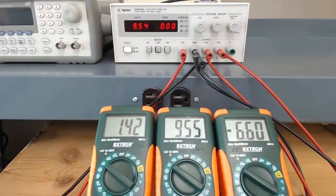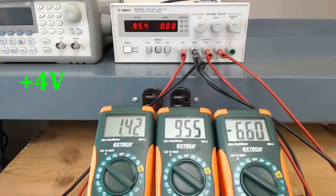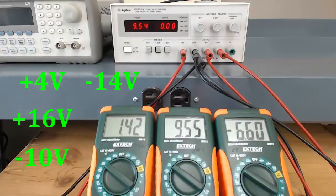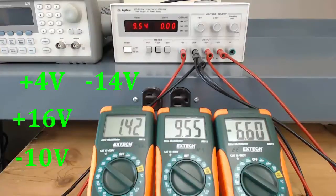An exercise I have often given to help students understand the DC power supply is to set up the power supply so that several voltages can be obtained at the same time without making further adjustments. If you understand voltage and how the power supply works, it should be fairly easy for you to set up the power supply so you can measure positive 4 volts, positive 16 volts, negative 10 volts, and negative 14 volts without adjusting the power supply. If you think you understand how this might work, I encourage you to pause the video and give it a try before continuing.